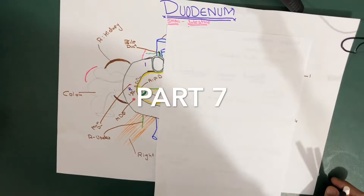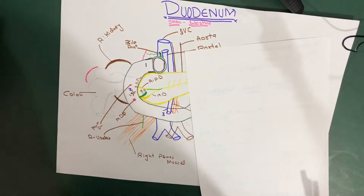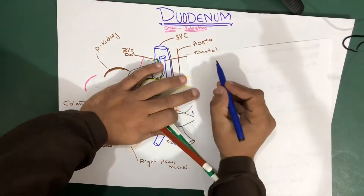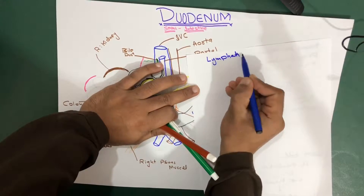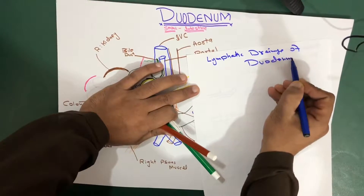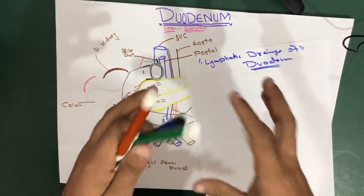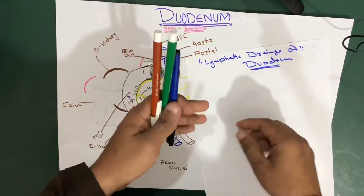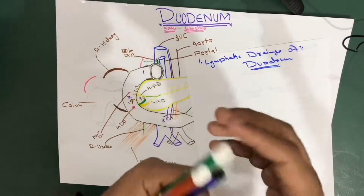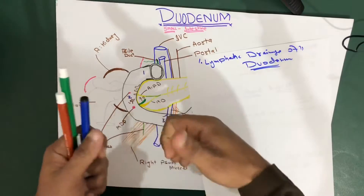Now let's talk about the lymphatic drainage. Venous drainage is very simple — I'm going to go after lymphatic drainage first. Let me give a quick review of the lymphatic drainage of the duodenum. I'll make a really detailed video on the lymphatic drainage of the whole gastrointestinal system, but in this video I have to cover the whole duodenum, so I'll explain it on the main branches.